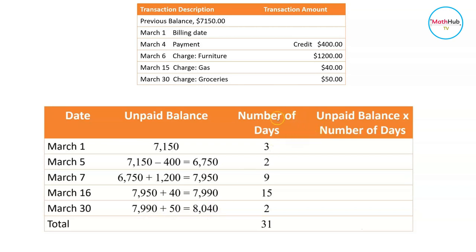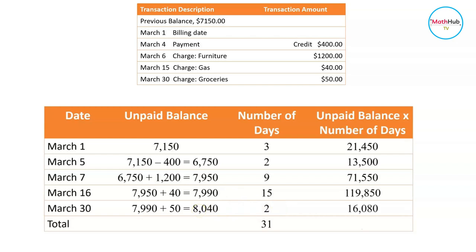So 7,150 times 3 equals 21,450. 2 times 6,750 equals 13,500. 9 times 7,950 equals 71,550. Then 15 times 7,990 equals 119,850. And 2 times 8,040 equals 16,080. Adding up all the entries in this column, the total is 242,430.